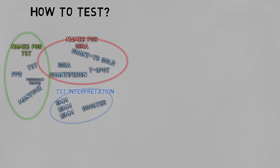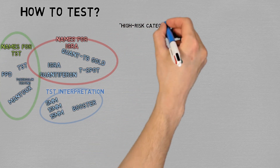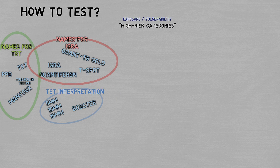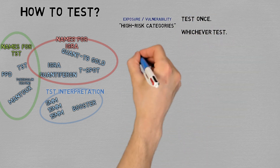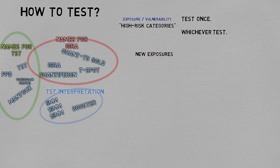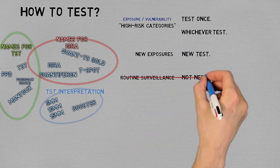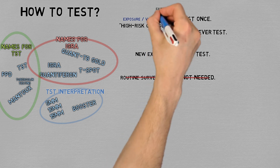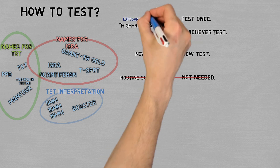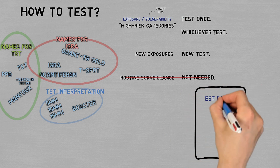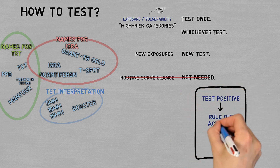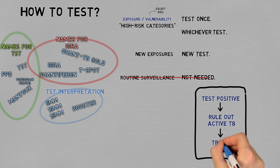A general guideline for testing would be this: for people who are in the categories mentioned, screen once with whichever test is available. Whenever there are new exposures, be it in the risk groups or not, you also screen with one test. There is no need for annual or any routine surveillance, and there's also no need for routinely testing children, even though they do fall into one of the high risk categories. If someone tests positive, rule out active TB as we outlined before, and then go ahead with latent TB treatment.